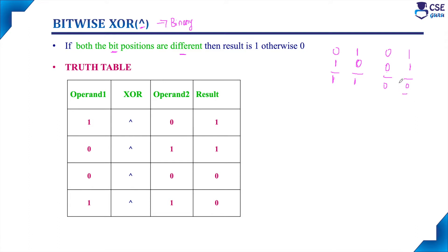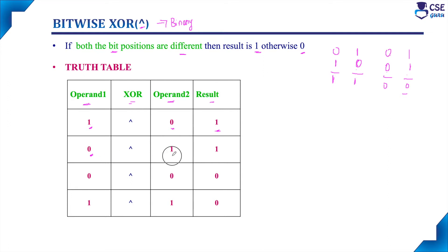The truth table for exclusive OR: operand one, operand two, and the result. If operand one bit position is one and operand two bit position is zero — both bits are different — so the result will be one. Next, operand one bit position is zero and operand two bit position is one, so the result will also be one since both bits are different.